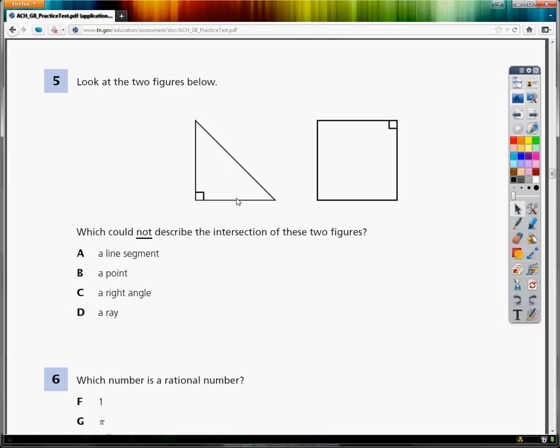So the first one says, a line segment. They want to know if it's possible for me to intersect at a line segment. Well, a line segment is just part of the line with endpoints. Well, here's one, and here's one. So I could connect them together, sort of make it like this, I guess. So a line segment is totally okay to connect.